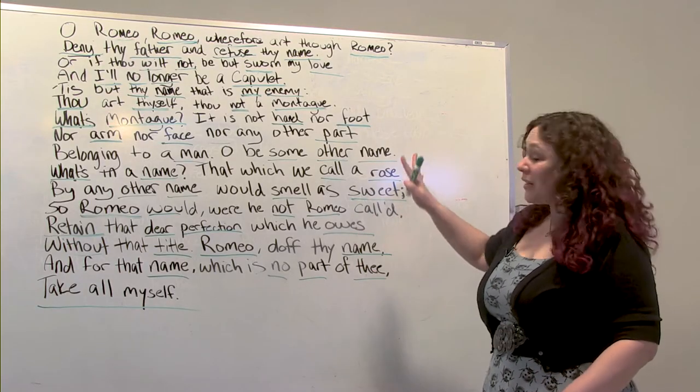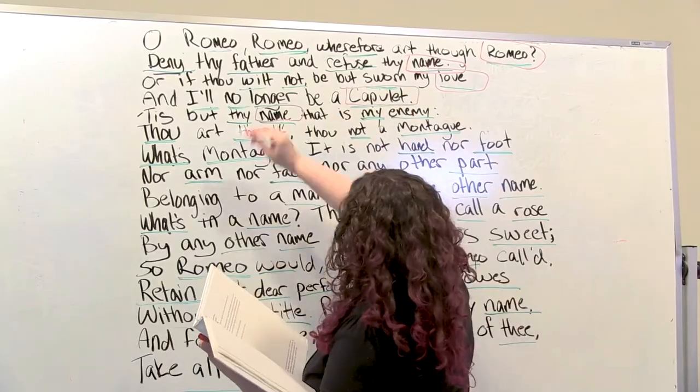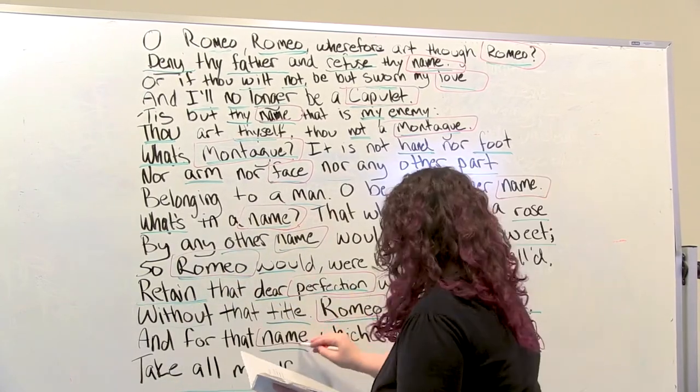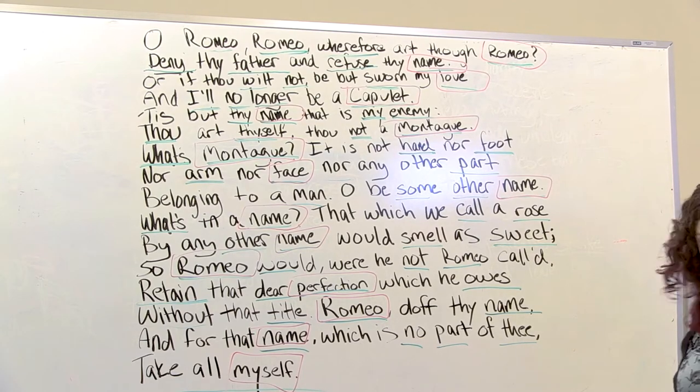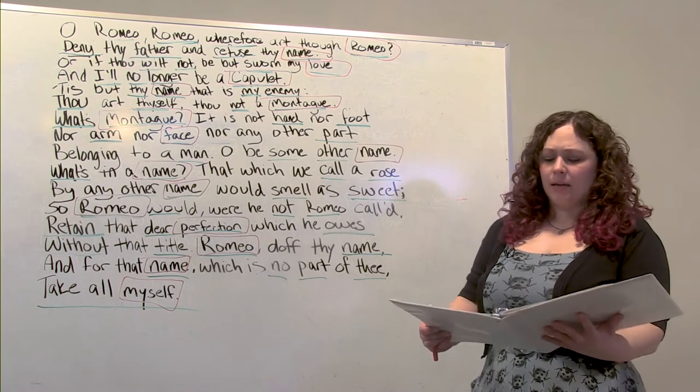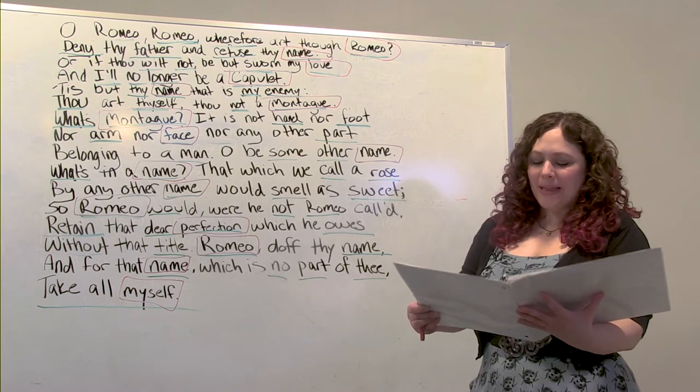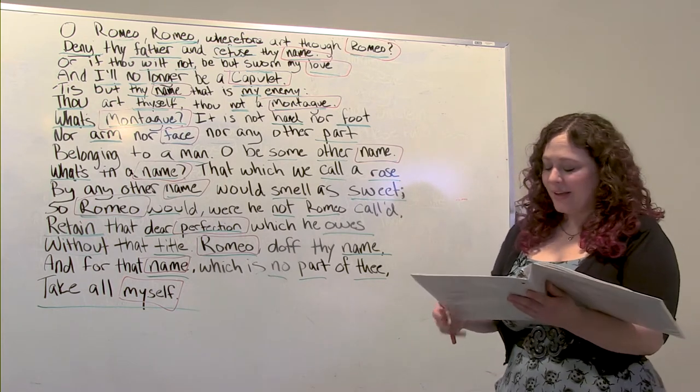What's so interesting is you still get a really good idea of what's being said — Juliet wants Romeo. Now let's take this one step further. From a four-word telegram, I want you to break it down to one word from each line. My one-word telegram reads: Romeo, name, love, Capulet, enemy, Montague, Montague, face, name, name, name, Romeo, perfection, Romeo, name, myself. What do you notice? There are a couple words said over and over again — the word 'name' being the main one. Name is said seven times in this soliloquy. The word Romeo is said six times.